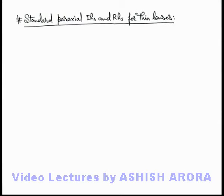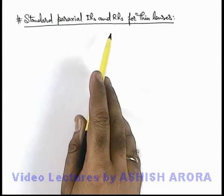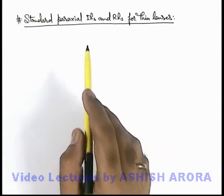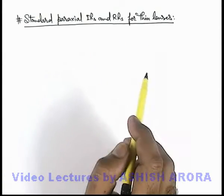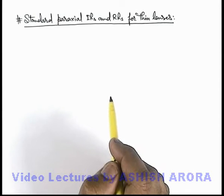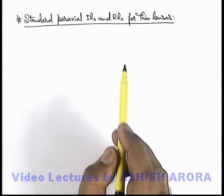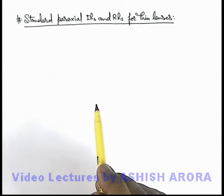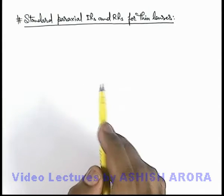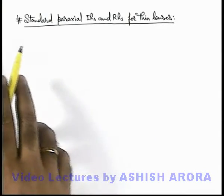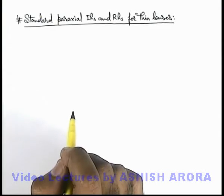Let us now discuss the standard paraxial incident rays and refracted rays for thin lenses. These rays we are going to study for understanding of image formation by thin lenses. As for image formation we need at least 2 incident rays and corresponding refracted rays. Details of image formation we'll study in next section, and right now we'll study about some standard rays which are used for image formation.